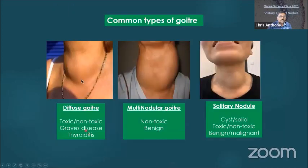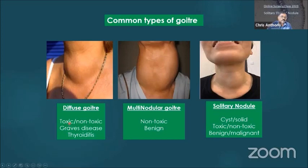These pictures show the different types of goiters. First is a diffuse goiter — a generalized enlargement of the thyroid gland, front and lateral, where the whole gland is involved. These are usually non-toxic or toxic goiters and can be Graves' disease or thyroiditis, which is inflammation of the thyroid.